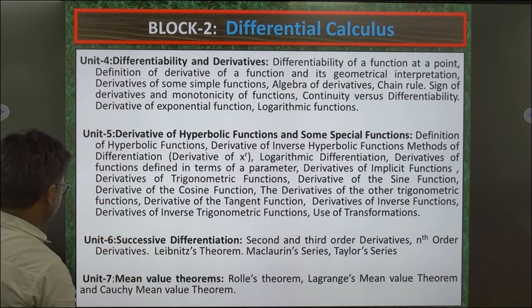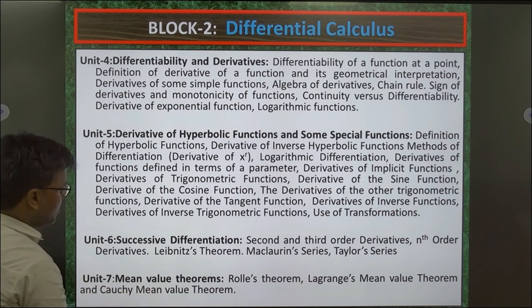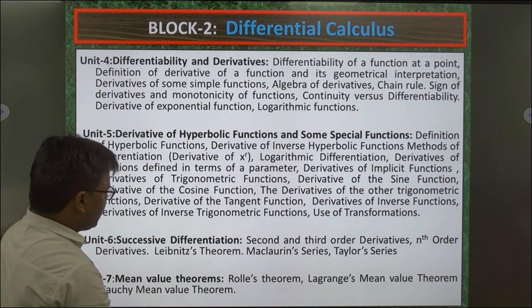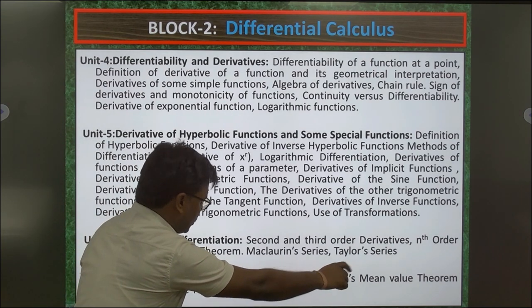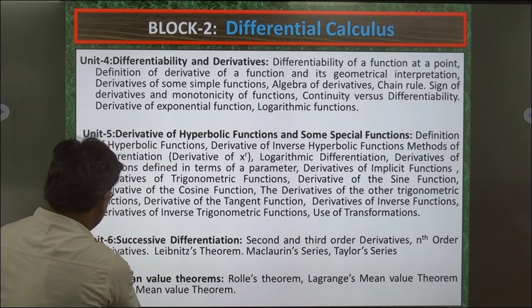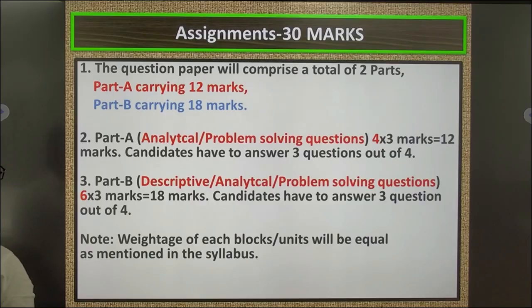Unit 7: Mean Value Theorems — Rolle's Theorem, Lagrange's Mean Value Theorem, and Cauchy's Mean Value Theorem. Assignment: 30 marks total.